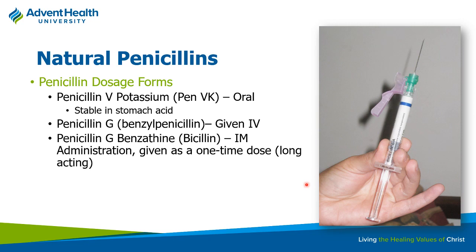There are a couple of forms of natural penicillin. Penicillin VK stands for penicillin V potassium — this is actually an orally bioavailable form. Normally, penicillin G by itself cannot be given via any route except IV because stomach acid will destroy it. Penicillin VK is stable in the stomach. Penicillin G, or benzyl penicillin, is the form we normally give IV — the one given every four hours. And there's penicillin G benzathine, or Bicillin, usually Bicillin LA. LA stands for long-acting.